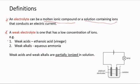Examples of weak electrolytes are weak acids, for example ethanoic acid or vinegar, and weak alkalis such as ammonia. Weak acids and weak alkalis are partially ionized in solution. Whenever you are asked to explain what is meant by the term 'weak', it has to do with the degree of ionization — partial ionization means a low concentration of ions, so it is classified as weak.